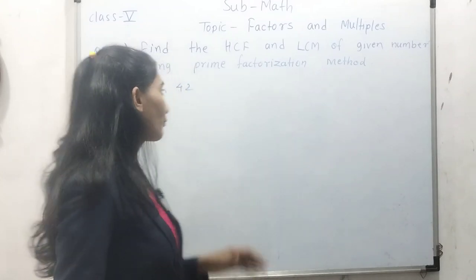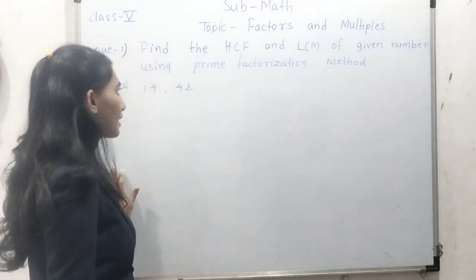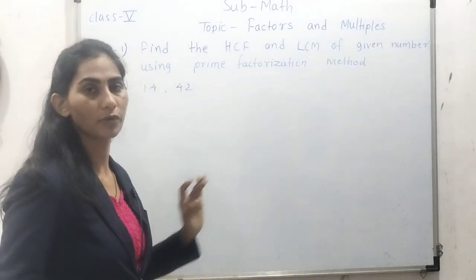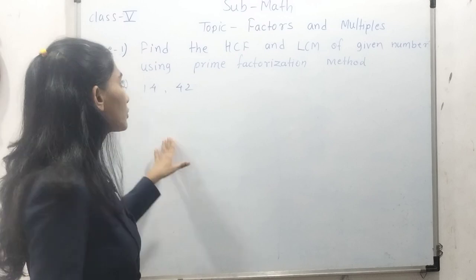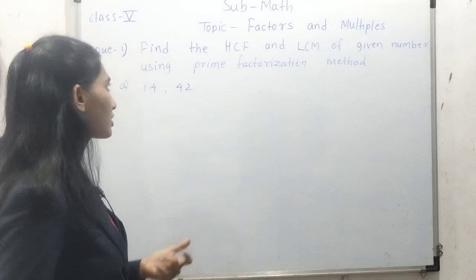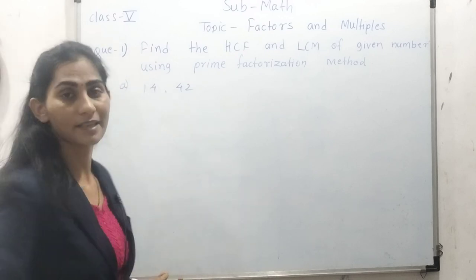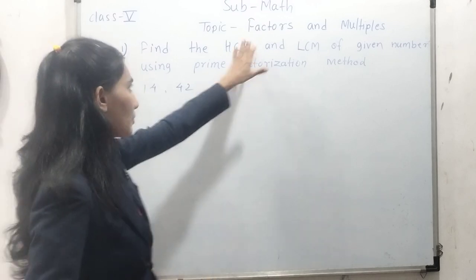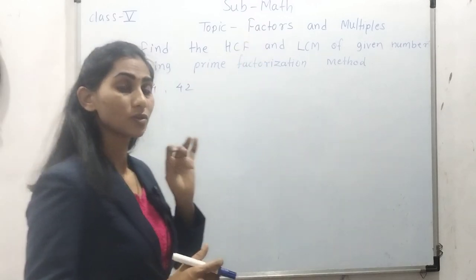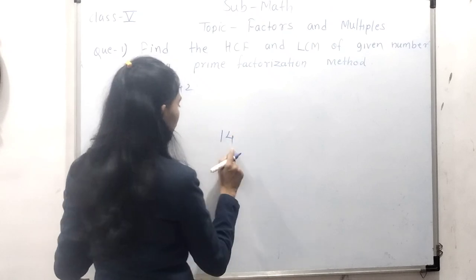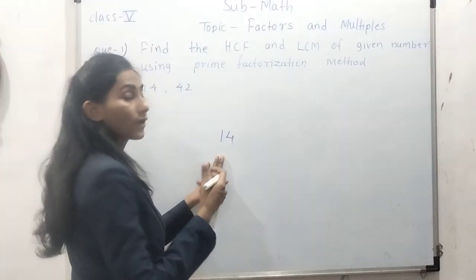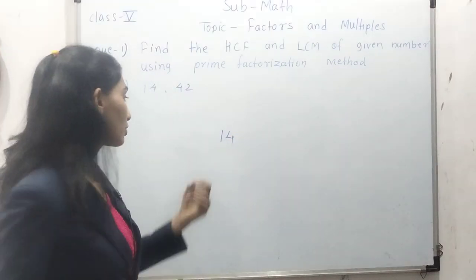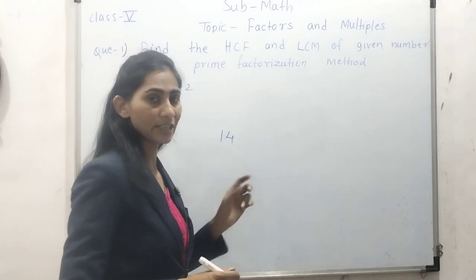Welcome students. Before going to solve this example, we have to find the HCF and LCM for the given numbers. So first, let's take a quick review on factors and multiples. Let us suppose 14 — we have to find any two numbers whose product should be 14.